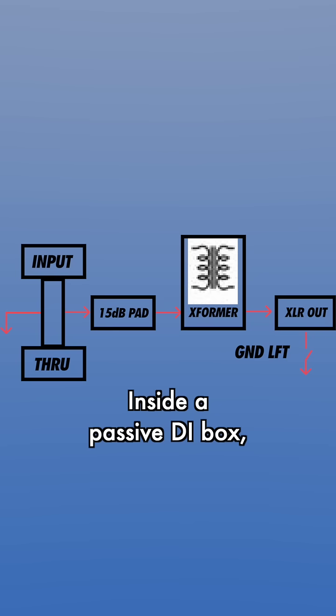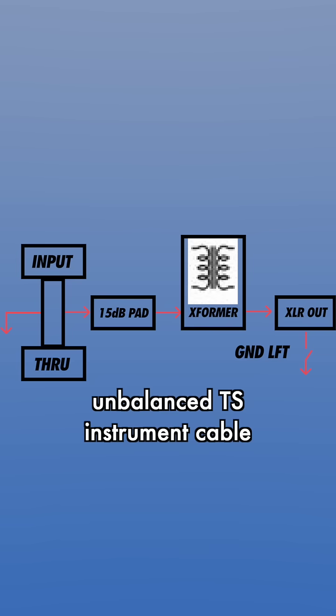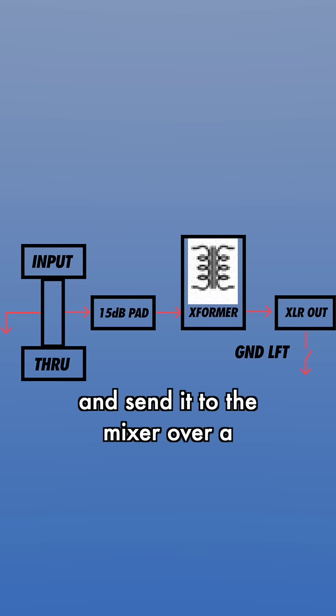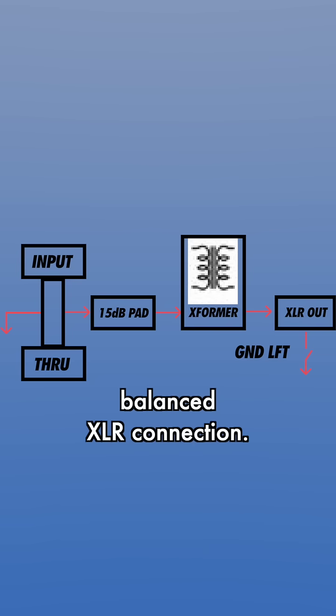Inside a passive DI box, there's a transformer that will take the signal from our unbalanced TS instrument cable and send it to the mixer over a balanced XLR connection.